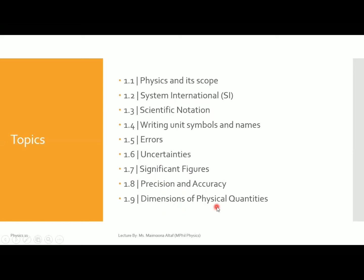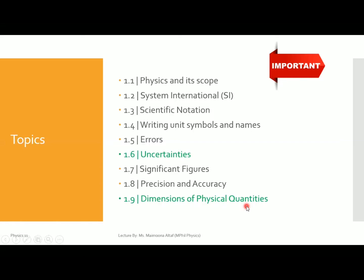The nine topics are: Physics and its scope, System International, Scientific notation, Writing unit symbols and names, Errors, Uncertainties, Significant figures, Precision and accuracy, and Dimensions of physical quantities. From these nine topics, the most important topic is Uncertainties, and the second most important is Dimensions of physical quantities.